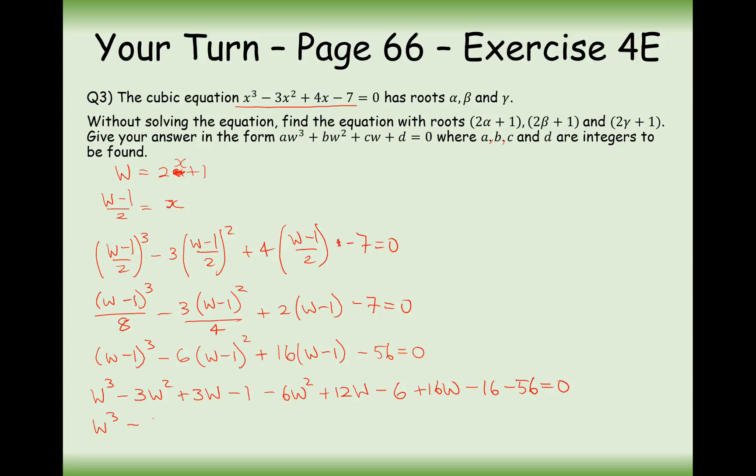Now we'll tidy this up. W cubed minus 9w squared. 3 plus 12, that's 15. Plus another 16, that's 31. So 31w. And then simplify up the numbers. We're going to get minus 1 minus 6, that's minus 7. Minus another 16, that's minus 23. So this will be minus 79 in total.